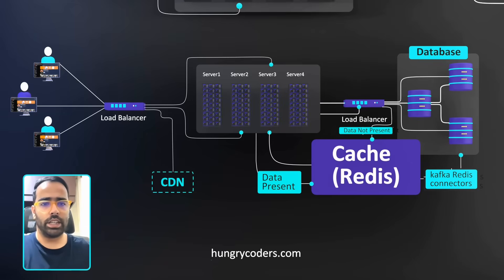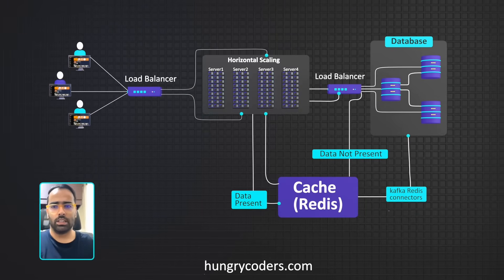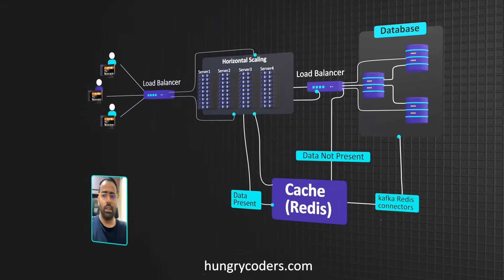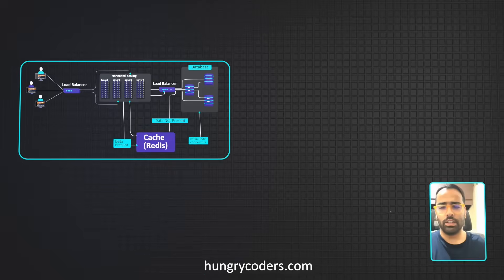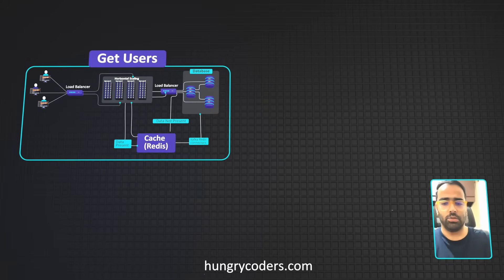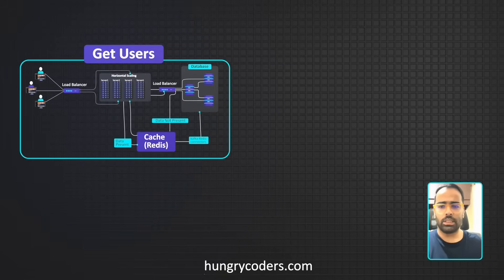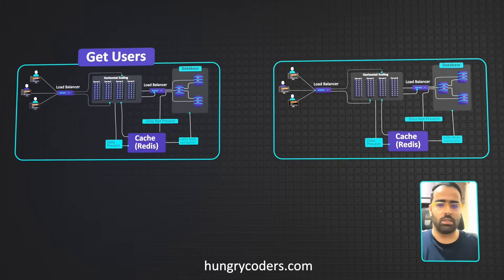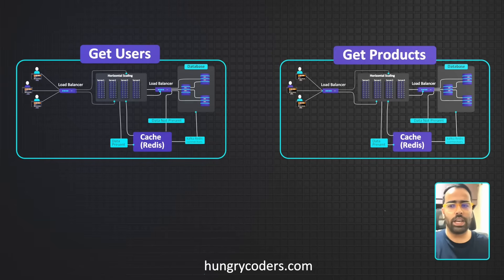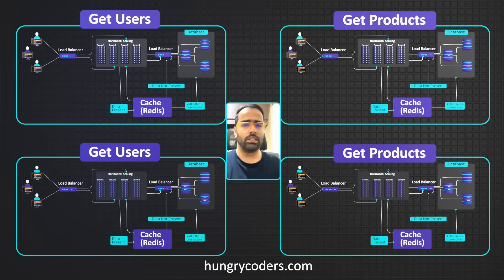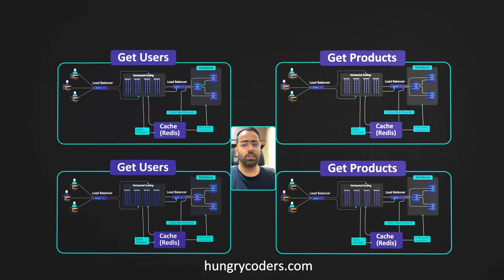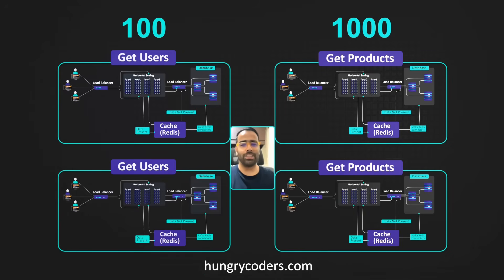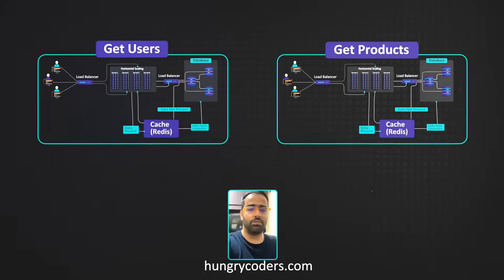Now let's say we divide our application architecture into microservices. Each microservice should have a similar architecture — its own servers, load balancer, caching, and database. Each microservice is loosely coupled from others with its own independent infrastructure. For example, a 'get users' service and a 'get products' service each have their own complete stack. With hundreds of microservices, the overall system becomes very large.